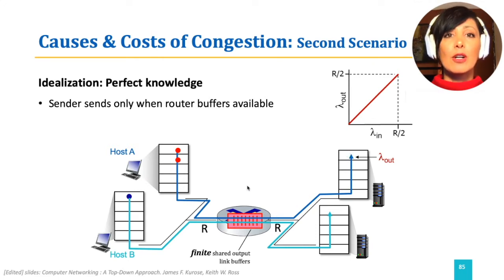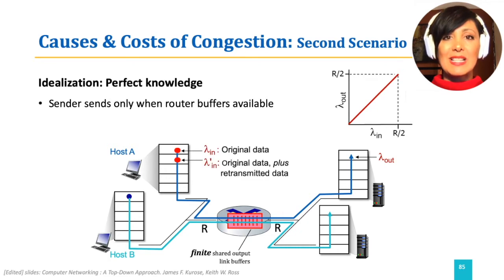Therefore, the lambda prime n will stay the same as lambda n, and we will maintain the same throughput as in the first scenario.